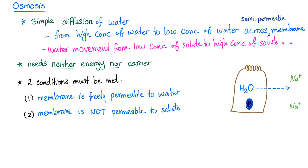How about osmosis? A simple diffusion for water from high concentration of water to low concentration of water across a semi-permeable membrane. The membrane is permeable to water but not permeable to the solute. Or you can define osmosis as water movement from low concentration of solute to high concentration of solute across the semi-permeable membrane. It's simple diffusion. No energy needed, no carrier needed.